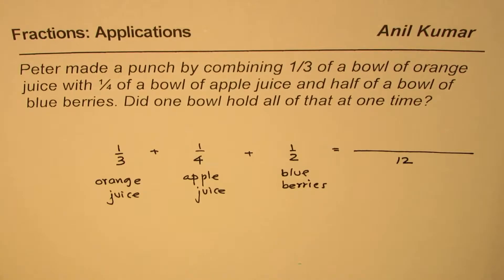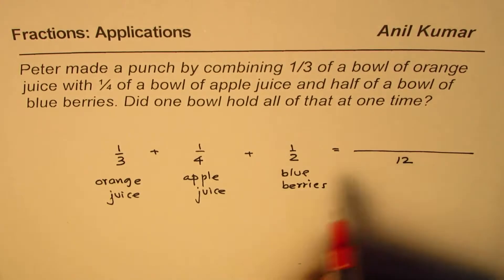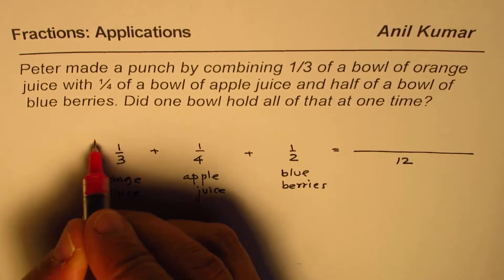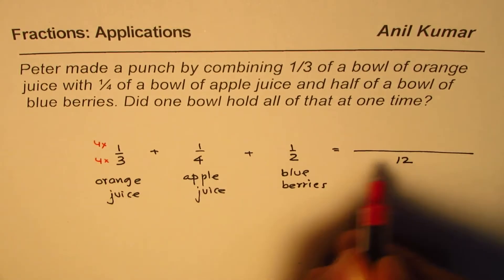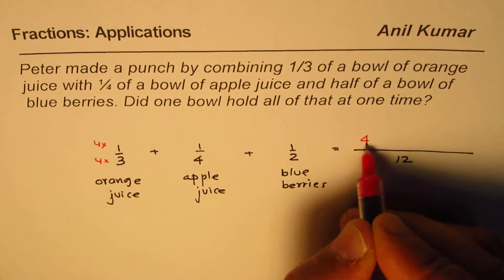Now how can you get 12? To get 12, I have to multiply this by 4. So we get 4 times 3 is 12, and on the top, 4 times 1 is 4.